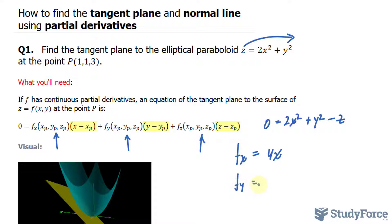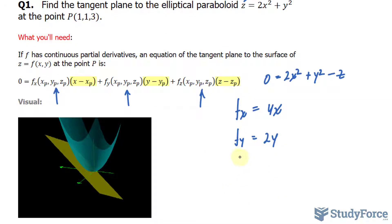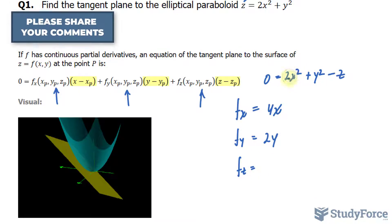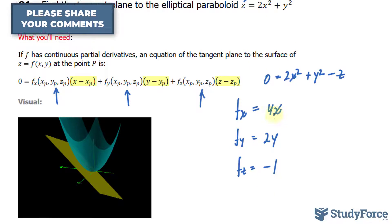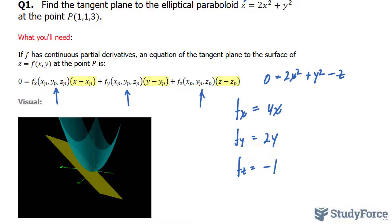f sub y equals 2y. That's a constant, it's 0. Finally, f sub z equals constant, constant, minus 1. Now I'll evaluate these three equations at the point (1, 1, 3). This becomes 4, that becomes 2, and that stays as negative 1.